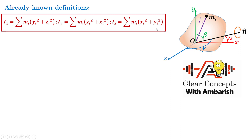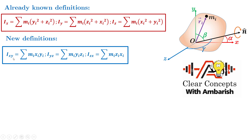Now I'm going to introduce a new term called the product of inertia. We define IXY = Σ mᵢ xᵢ yᵢ — you take the mass mᵢ, multiply its X coordinate, multiply its Y coordinate, and sum over the entire body. Similarly, IYZ = Σ mᵢ yᵢ zᵢ and IZX = Σ mᵢ zᵢ xᵢ. This is how I define the products of inertia; we'll see their use in a short while during the derivation.